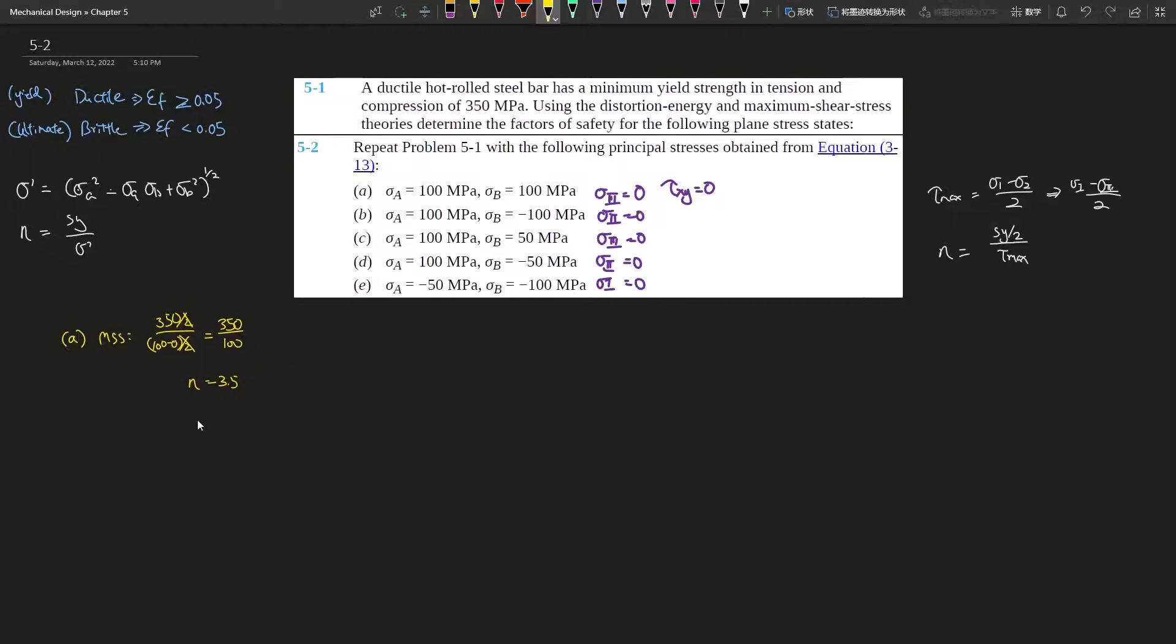And using von Mises, that would be, actually, I'm just going to do stress prime using the equation that's given. So, that's 100 squared minus 100 times 100, plus 100 squared. So, yeah, that, and square root of that, which gives you 100, and it's factor of safety equals yield, 350 divided by 100, and that still gives you 3.5, right? Everything is in megapascals, so we don't have to worry about units in this case.